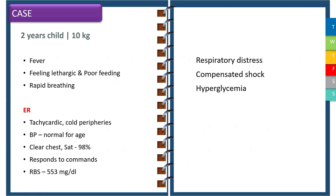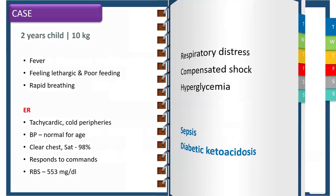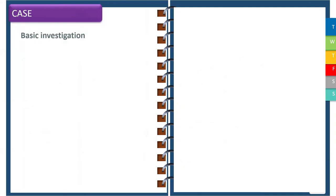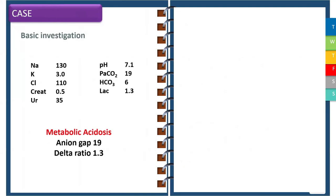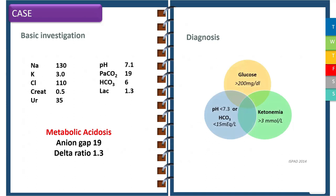Two common diagnoses to consider at this point are sepsis and diabetic ketoacidosis. His initial lab results show metabolic acidosis with a high anion gap and a delta ratio of 1.3. Ketone levels were 4 mmol per liter, which is quite high. This satisfies the triad of DKA: hyperglycemia with glucose greater than 200 mg per deciliter, metabolic acidosis with pH less than 7.3 or bicarbonate less than 15 mEq per liter, and ketonemia with ketone bodies more than 3 mmol per liter.